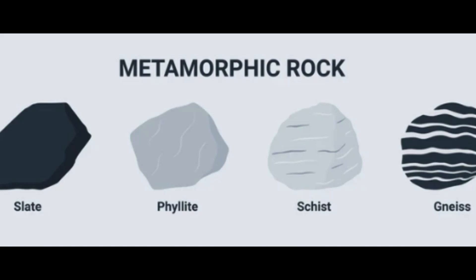Schist is a medium-to-high-grade metamorphic rock that is formed from shale or mudstone. The minerals in schist are typically mica, chlorite, talc, and amphibole. Schist has a well-developed foliation and a coarse, layered texture. The layers are often made up of different minerals, giving the rock a banded appearance.